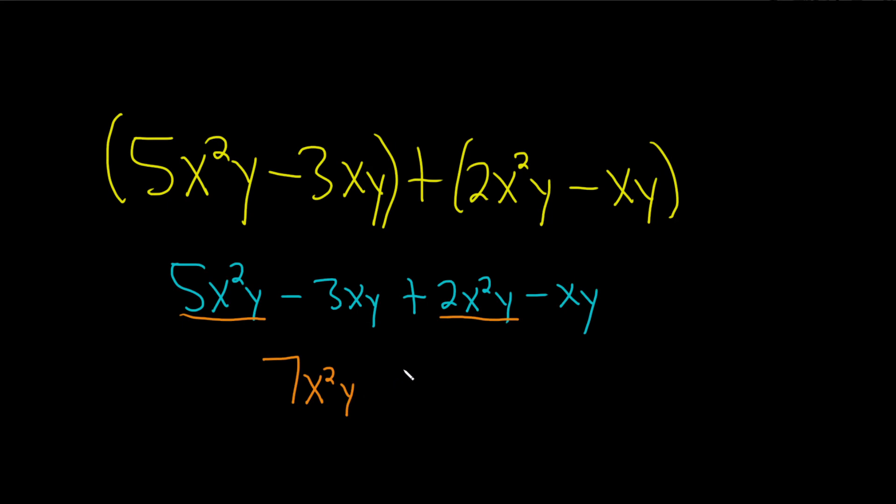Now we can combine the xy terms. In order to really understand that, it's important to realize that this is a 1, right? There's an invisible 1 there. So basically, you just subtract the negative 3 and the negative 1, and that gives you negative 4. And then you just keep the xy.